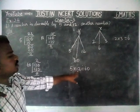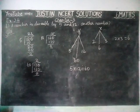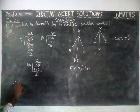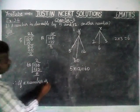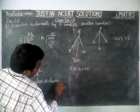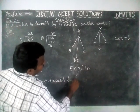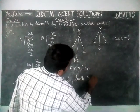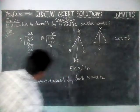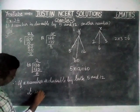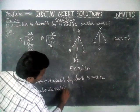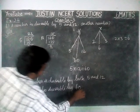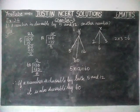The reason is 5 and 12 are factors of 60, therefore it will be divisible. So, if a number is divisible by both 5 and 12, it is also always divisible by 60. That's all students. Kindly share this video with your friends and subscribe to our channel. Give your comments in the comments box. Thank you.